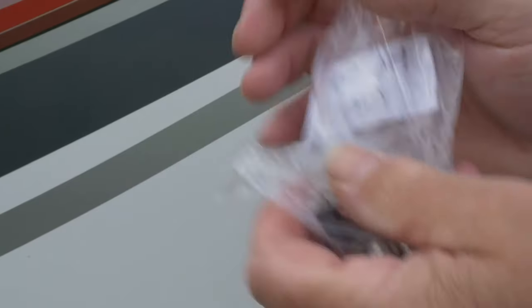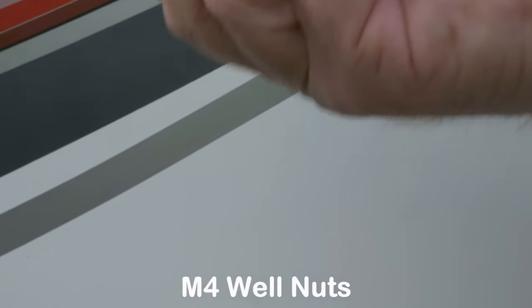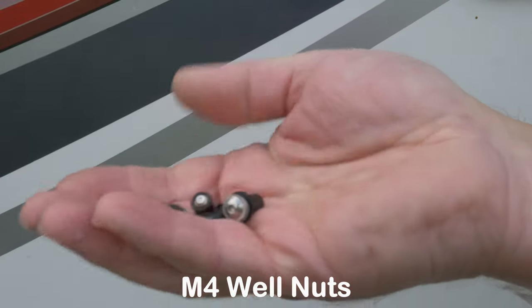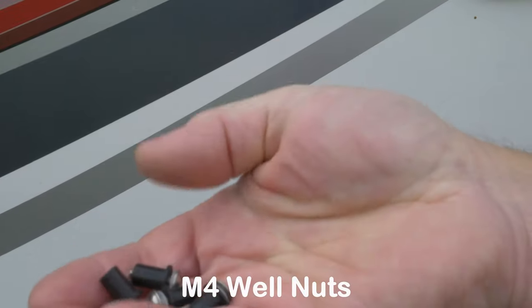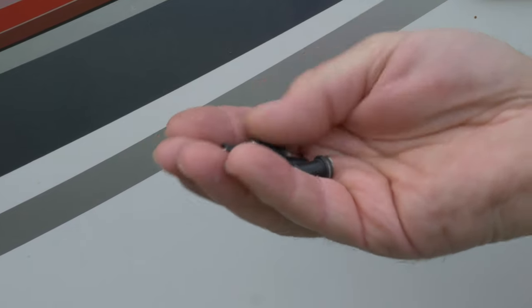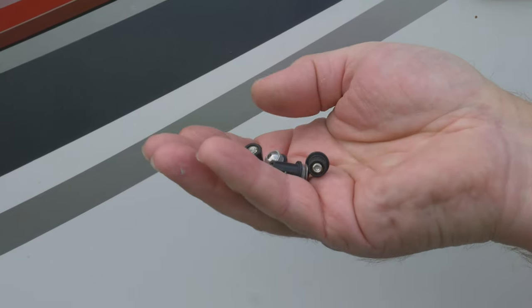So I've looked for a better solution to hold these latches in place and what I've come up with is well nuts. Now these are designed for boats predominantly I think and they're also known to the motorcycle trade for holding fairings together. Basically it's a bit like a rivet nut but it's made out of soft rubber instead of metal so it's a less industrial means of doing it.